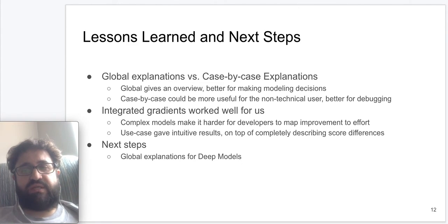For the neural net approach, integrated gradients worked well for us and gave intuitive results where we could clearly see the relation between the utilized features and the goals that we are trying to optimize. The next step for us would be towards understanding and preparing global explanations for deep models, which is currently missing from a case-by-case explainability approach that we apply. This concludes our case study, and thanks a lot for listening.